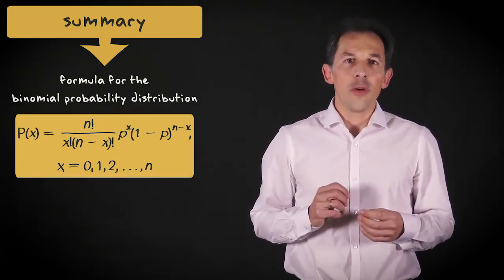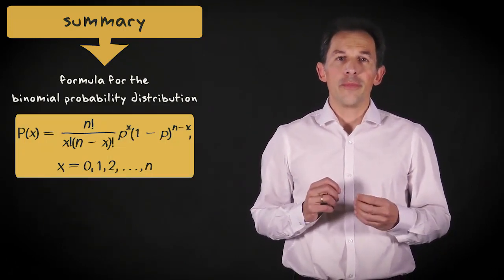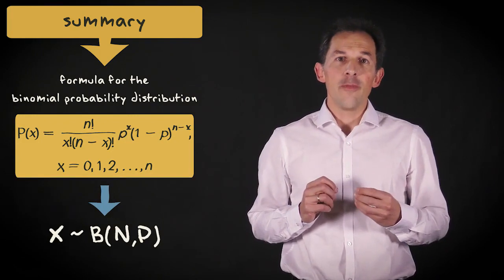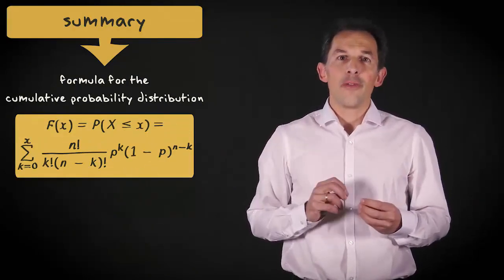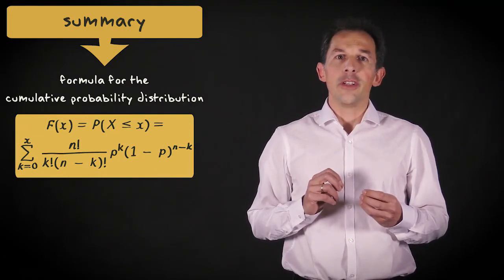Here, the formula for the binomial probability distribution is shown. And this is the same formula in shorthand. Finally, the formula for the cumulative probability distribution is shown here.